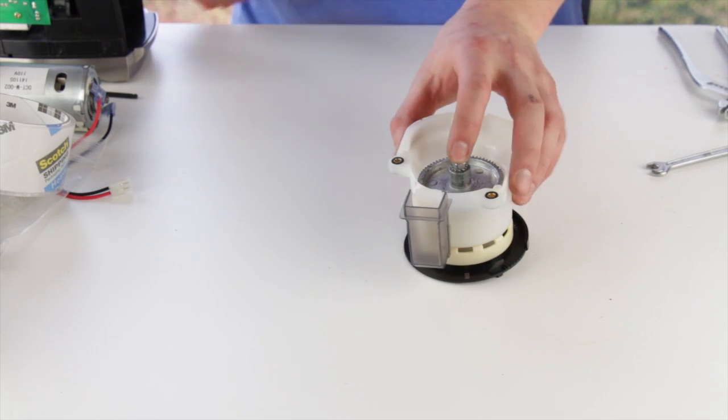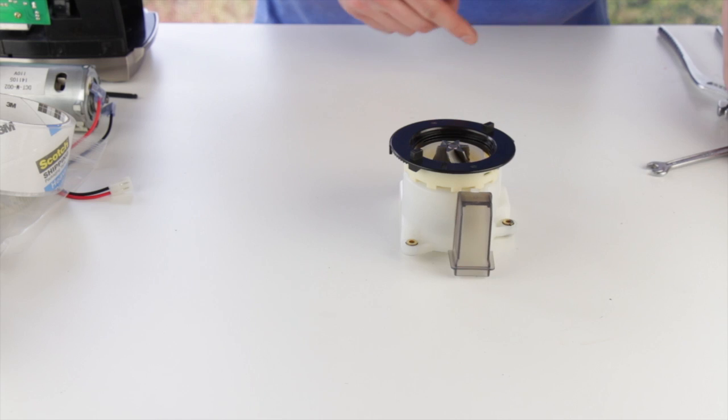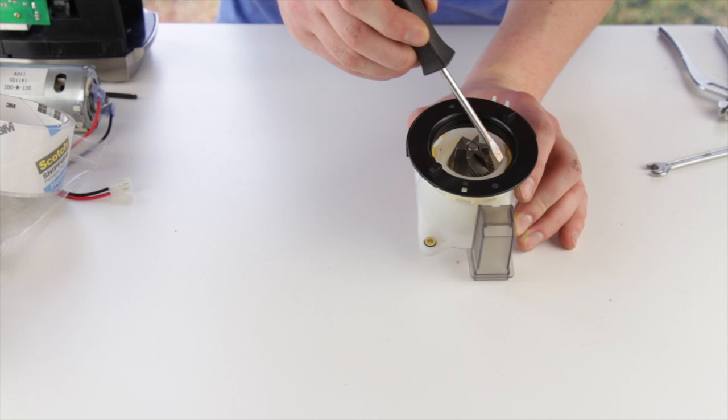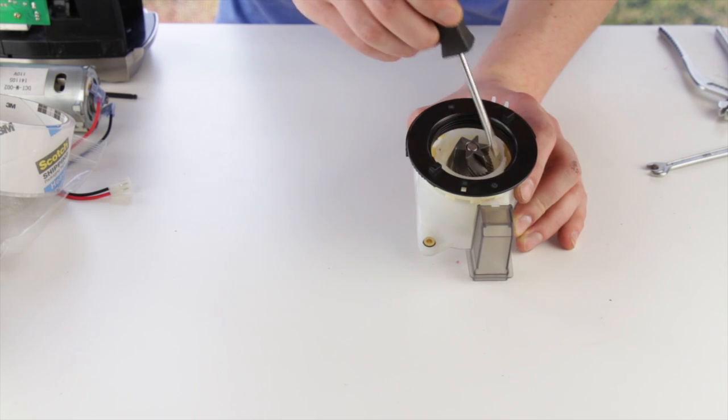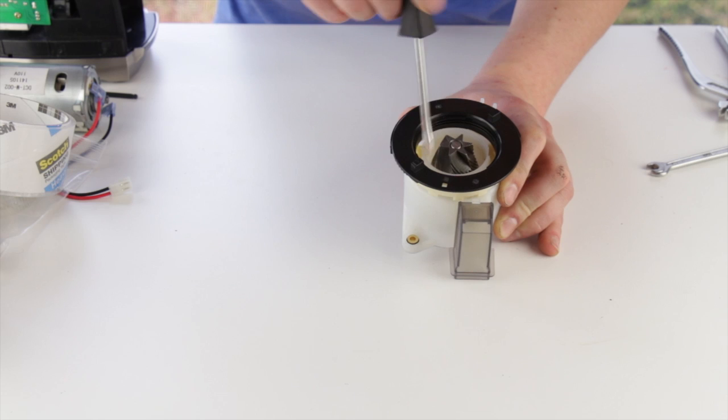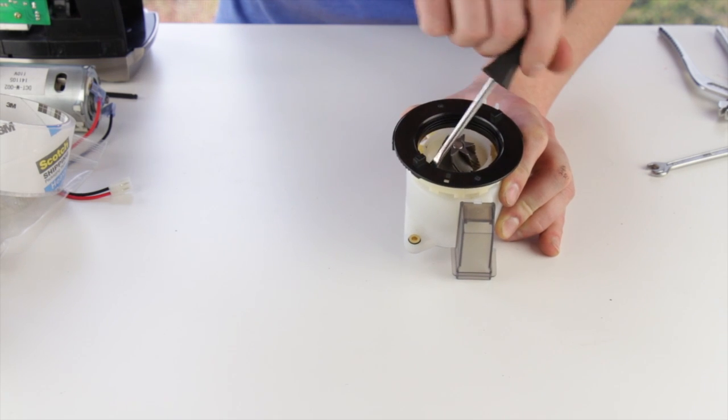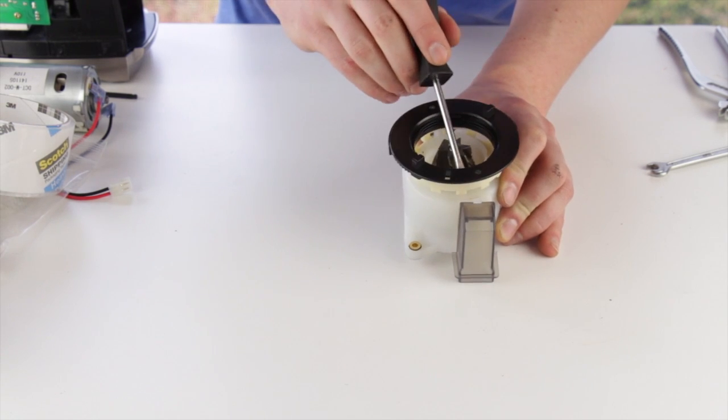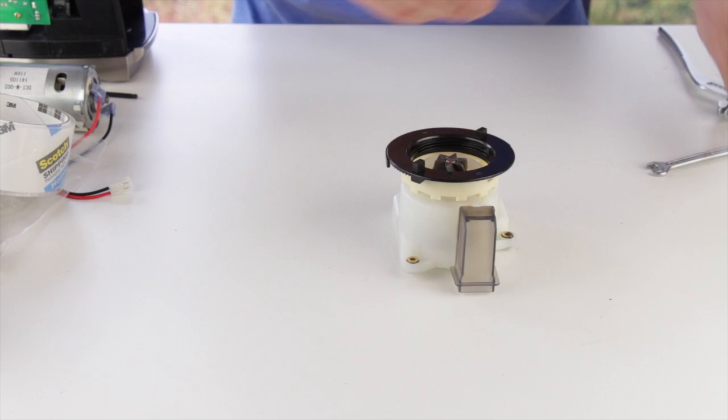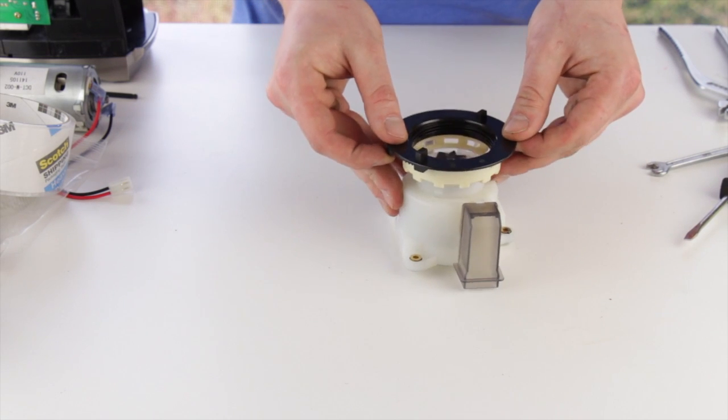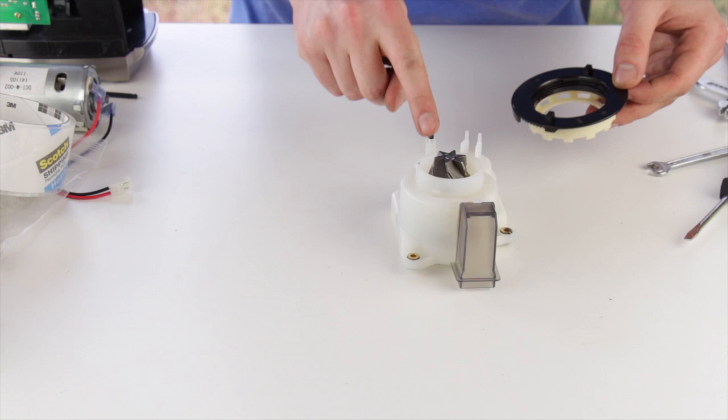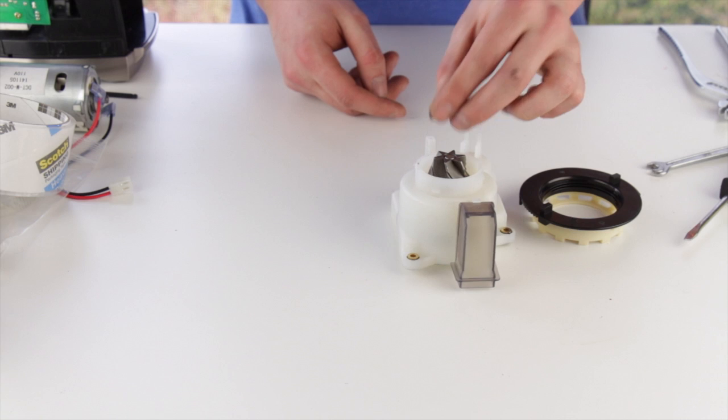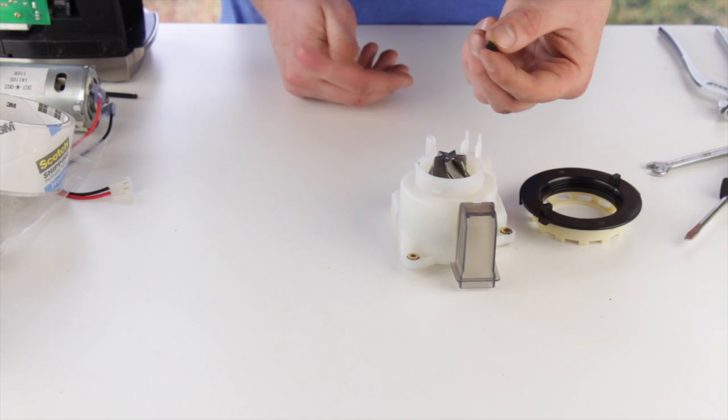Before removing the old gear, we're going to remove the adjustment ring. Use a flathead screwdriver and insert it between the white gearbox housing and the adjustment ring and pry up gently. We're going to do this in several clock positions until the adjustment ring comes off. Underneath the adjustment ring, there's a spring-loaded detent. This is what provides the clicking noise when you rotate your hopper. Take care not to lose it when you're removing the adjustment ring as it can pop out.